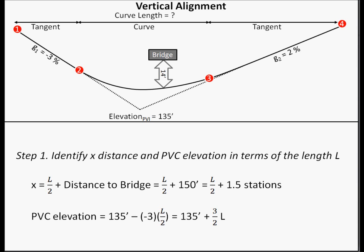For a symmetric parabolic curve, the length of the curve is evenly divided on each side of the PVI. In other words, the distance from the PVC to the PVI is half of the length of the curve, and the distance from the PVI to the PVT is also half of the length of the curve. The term x is used to denote any horizontal distance along the curve from the PVC point, or the point where the roadway begins to curve, shown in this image as point 2.